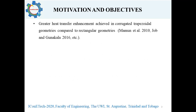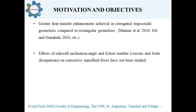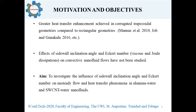Greater heat transfer enhancement has been shown to be achieved in corrugated trapezoidal geometries as compared to rectangular geometries, as seen in studies like Mamoun et al., Joban Gunakala, and many other research articles. However, the effects of sidewall inclination angle and Eckert number — which is related to viscous and joule dissipation effects within fluids — on convective nanofluid flows have not yet been studied. Therefore, the aim of this investigation was to examine the influence of the sidewall inclination angle and Eckert number on unsteady flow and heat transfer phenomena in alumina-water and SWCNT-in-water nanofluids.